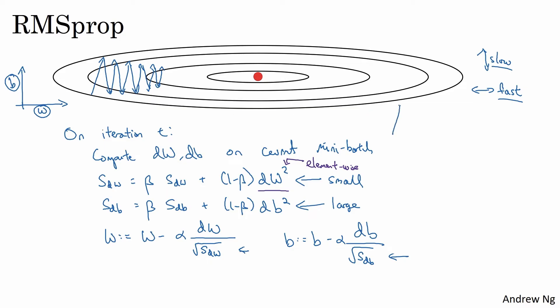So with derivatives like this, this is a very large dB and a relatively small dW. Because the function is sloped much more steeply in the vertical direction than is in the b direction, than in the w direction, than in the horizontal direction.